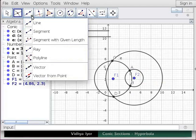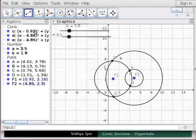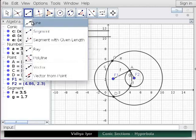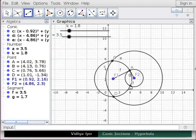Under Line, click on Segment and click on Points A and F1 to join them. Then click on Points A and F2 to join them. Similarly, using Segment Tool, join B and F1 as well as B and F2.